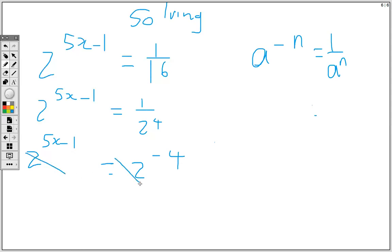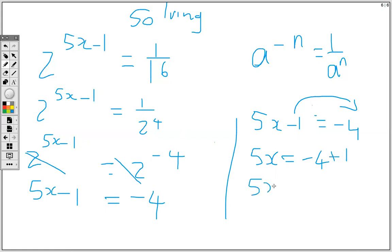We drop the base and equate the powers, so we have 5x minus 1 equals negative 4. Now we're going to solve. So we have 5x minus 1 equals negative 4, so 5x is equal to negative 3.